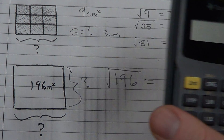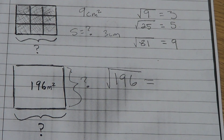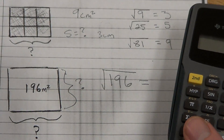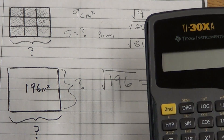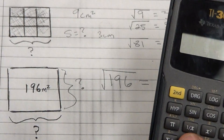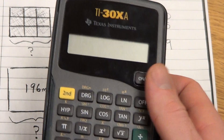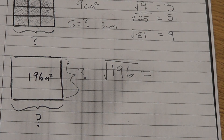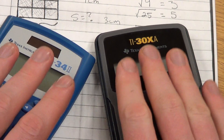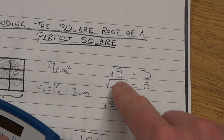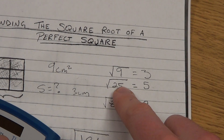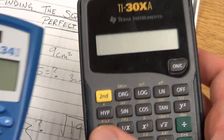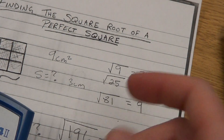I'm going to show this on two different calculators — two different ways to find it — because these calculators are very different in how you find the square root of a number. If you're not sure how it works on your calculator, do an example you already know. For instance, if you know the square root of 25 is 5, try that on your calculator to test whether you're doing it right.